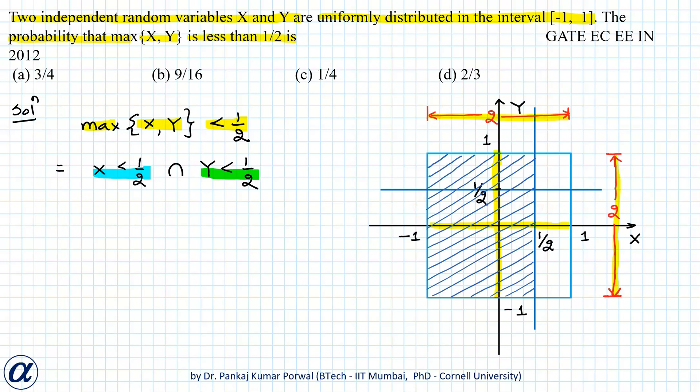So the event that X < 1/2 and Y < 1/2 will correspond to the part of our square where both the blue and green shading overlap.